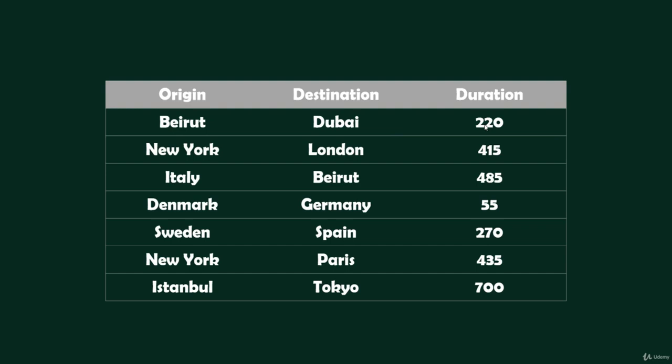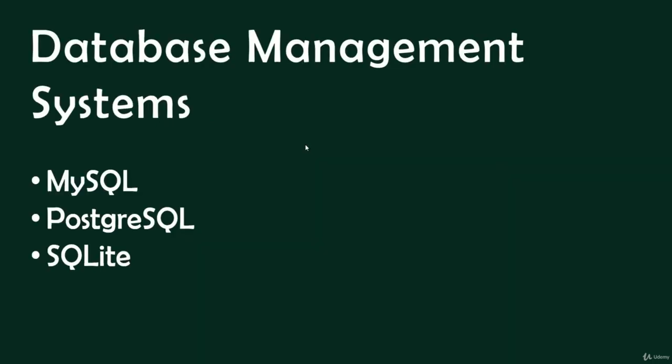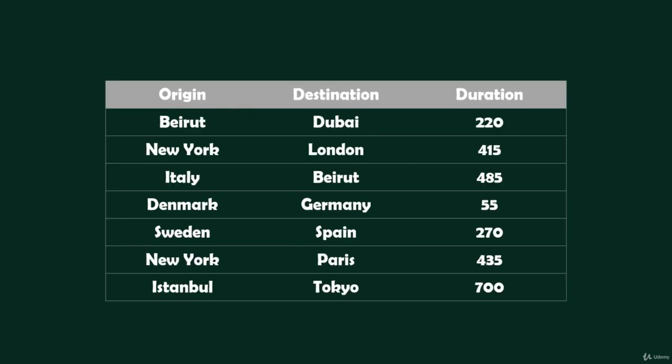SQL is going to be a database language designed to interact with relational database management systems — databases that organize data into tables where every table has rows and columns. There are a number of different database management systems that implement the SQL standard. Some of the most popular are MySQL, PostgreSQL, and SQLite.